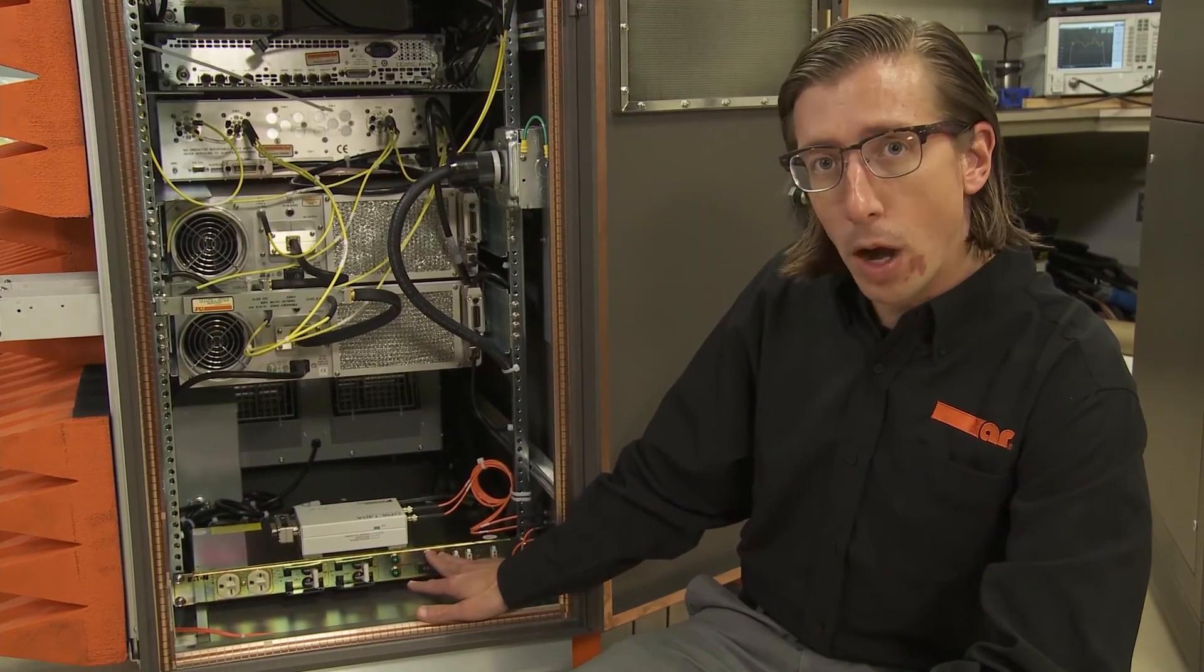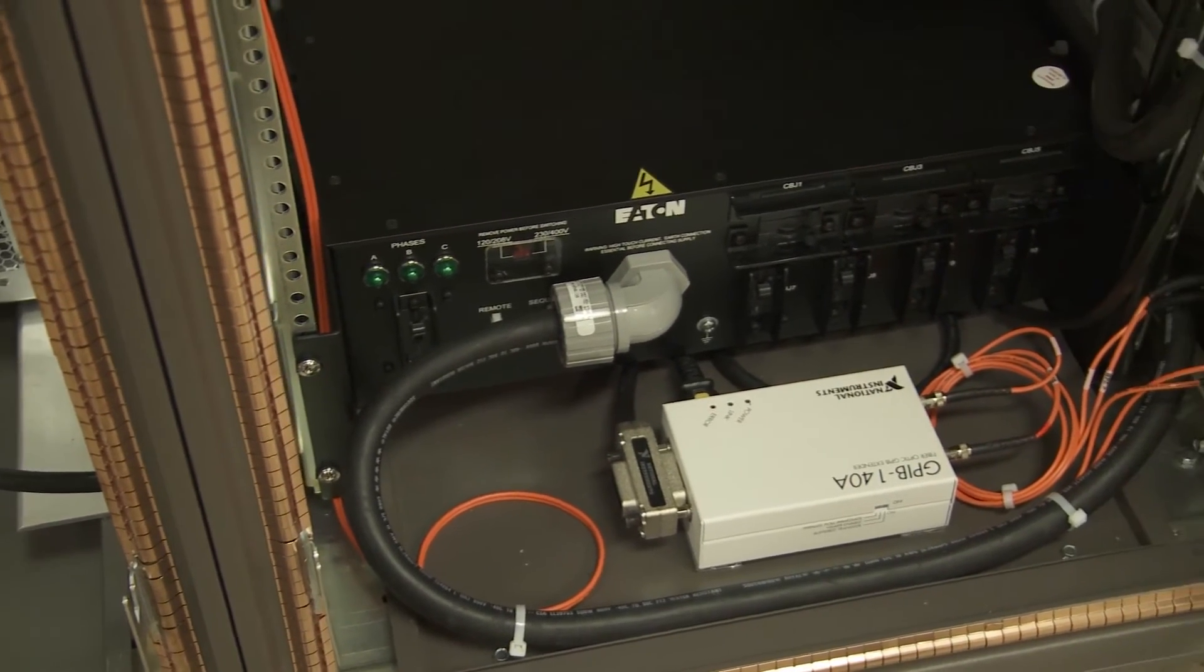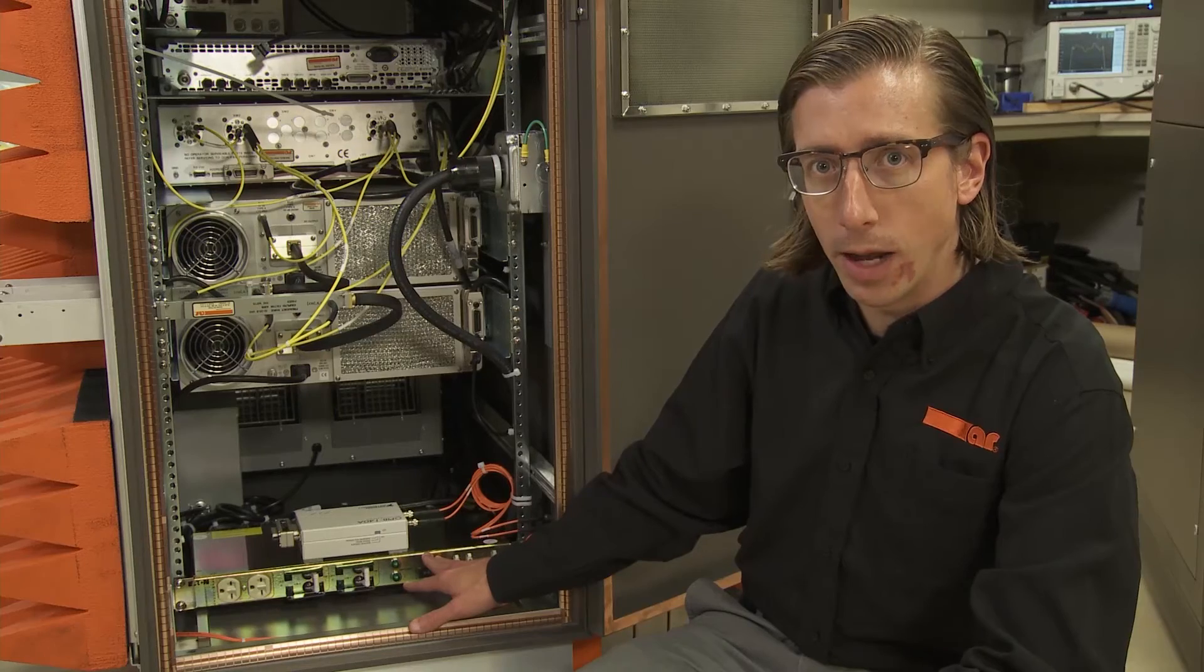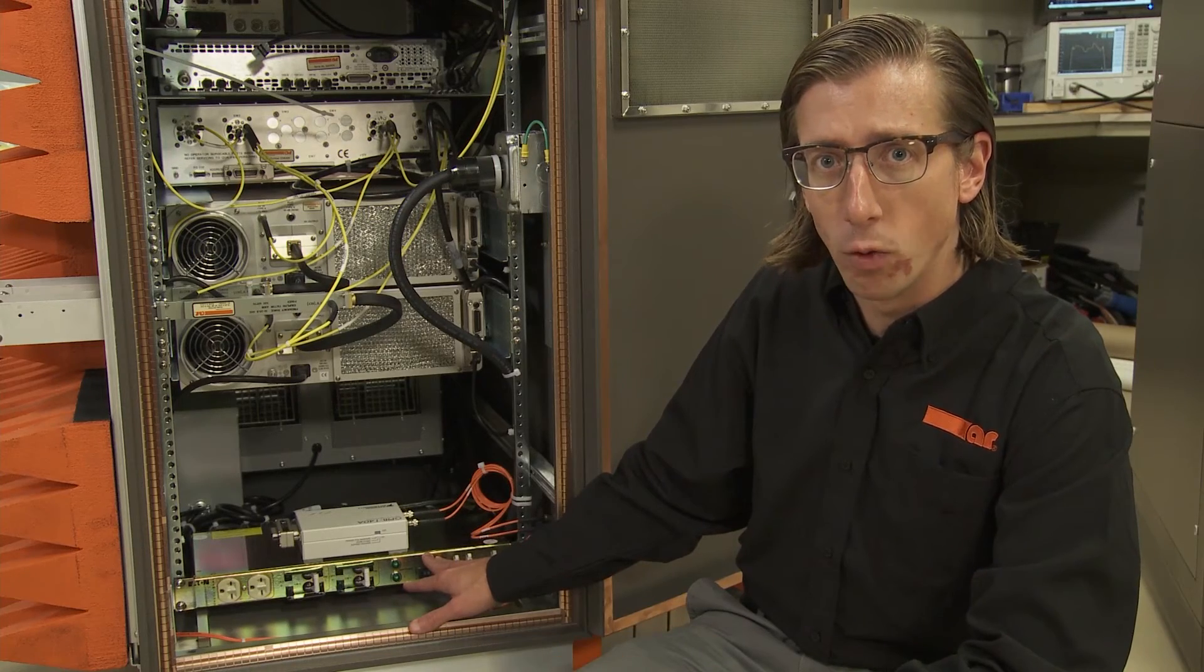Now at the very bottom, we have a power distribution unit, which is providing filtering and breakering of all incoming power to the rack and then distributing that power to each of the individual components.